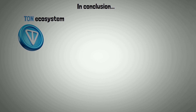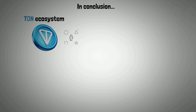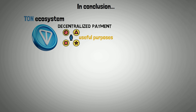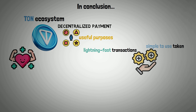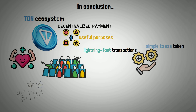In conclusion, within the TAN ecosystem, TAN Coin can be used for a variety of useful purposes, including decentralized payment. The network provides lightning-fast transactions, and the token is simple to use. The token will keep getting better and more appealing to a general audience as developers add new features.